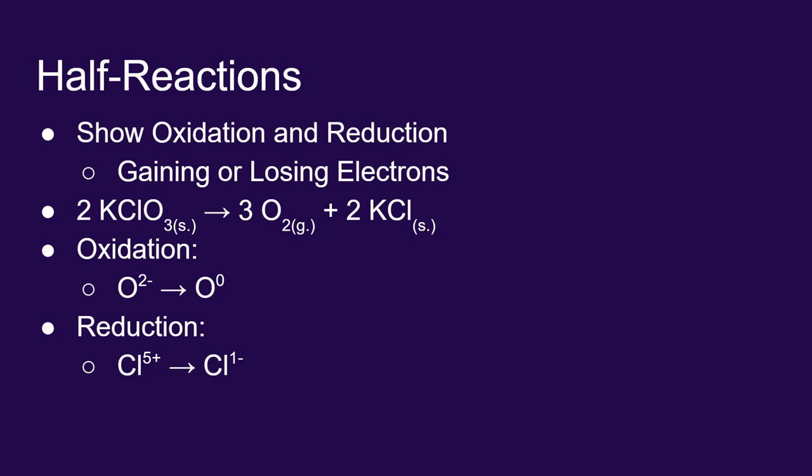Let's talk about the electrons here. How do you go from a negative 2 charge to a neutral charge? In order to oxidize, in order to increase your oxidation state, you have to lose electrons. So to go from negative 2 to neutral, you have to lose or give off 2 electrons. Reduction is the lowering of your oxidation state, or you have to gain electrons. To go from a plus 5 to a negative 1, you have to gain 6 electrons.